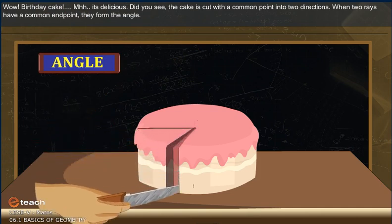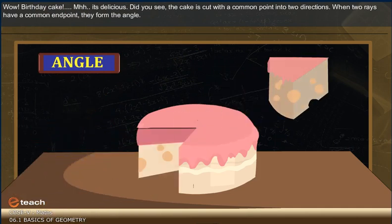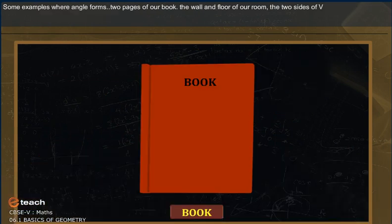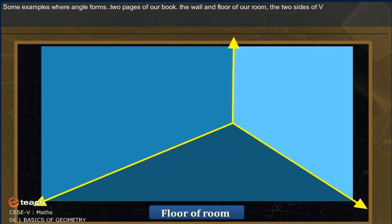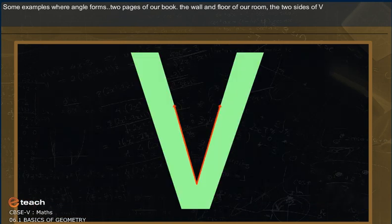they form the angle. Some examples where angle forms: two pages of our book, the wall and the floor of our room, the two sides of V.